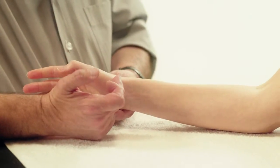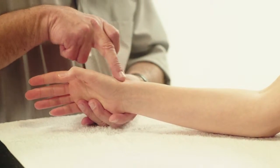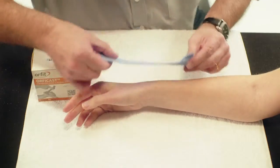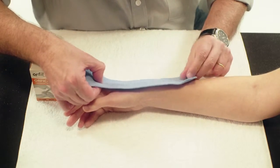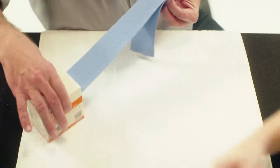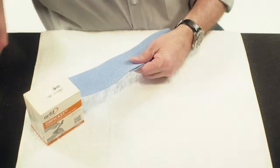A tendinitis of the extensor tendons of the first dorsal compartment. Cut two strips of Orficast 6 cm wide. Measure each two times the length from the thumb to the middle third of the forearm and cut the Orficast accordingly.